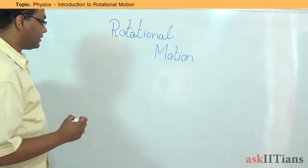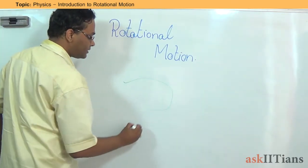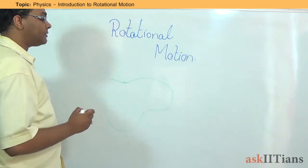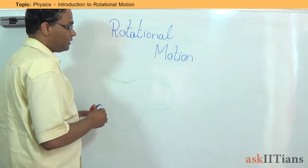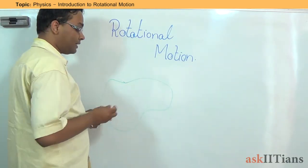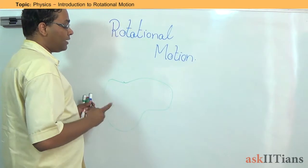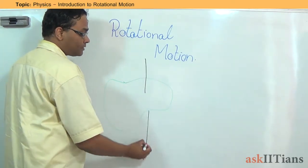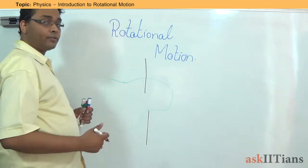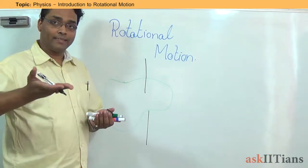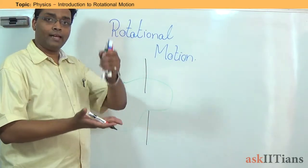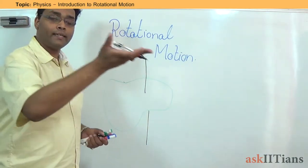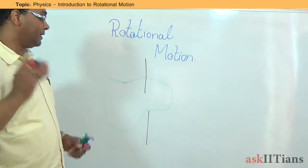What we have here is that if you take any arbitrary shaped object, and let's assume that this is a three-dimensional object, and it is rotating about an axis that is passing perpendicular to this. So the object may be like this, and you have an axis passing like this, so the object is basically rotating in its plane.